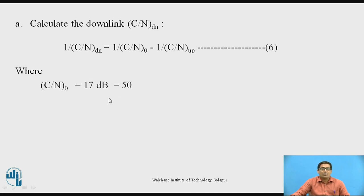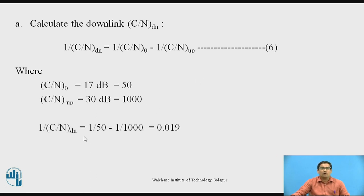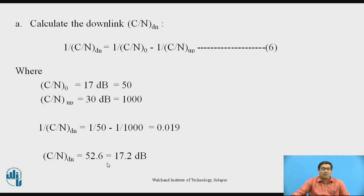Converting 17 dB to a normalized value gives 50. C/N up = 30 dB; converting to normalized gives 1000. Putting into equation 6: 1/(C/N)down = 1/50 − 1/1000 = 0.019. Therefore (C/N)down = 1/0.019 = 52.6 (normalized). Converting back to decibels gives (C/N)down = 17.2 dB.